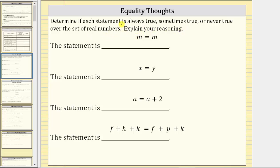First, we are given the statement or equation m equals m. The variable m represents a changing value, but whatever value m takes on, it will always be equal to itself, and therefore the statement is always true.